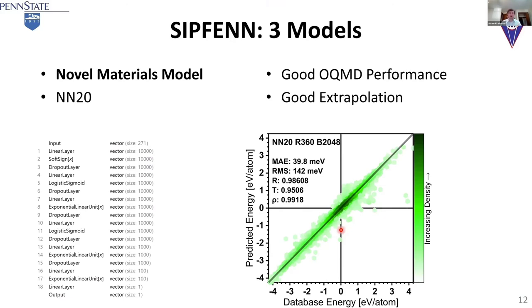This is the third model we have, called the Novel Materials Model. It's not as good as the first one at OQMD — the mean average error is about 40 meV, which is still much better than what was reported before — but it's much better at predicting physical behaviors. For example, when given a sheared material, the first two models predicted that during shearing the energy would drop, which is not physical because then it would shear on its own. This was the only model predicting there would be an increase in energy. So it provides more physical predictions and better extrapolation to what was not included in OQMD, like some intermetallic phases like Sigma.